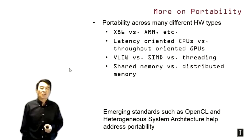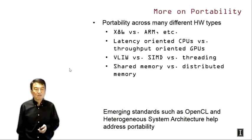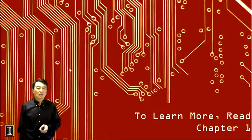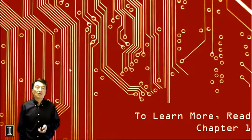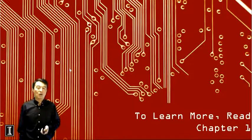Toward the end of the course, we will introduce emerging standards such as OpenCL and heterogeneous system architecture that help address application portability. We have now completed all the high-level introduction and context lectures. Starting from the next lecture, we will introduce the CUDA programming interface and begin helping you develop your lab assignments. For more context, I encourage you to read chapter one of the textbook. Thank you.